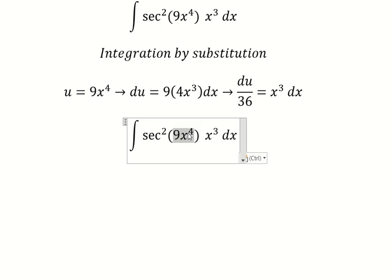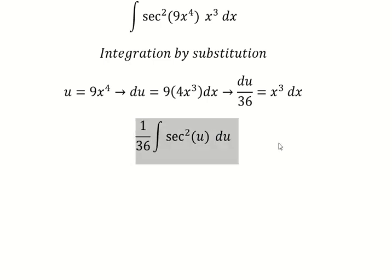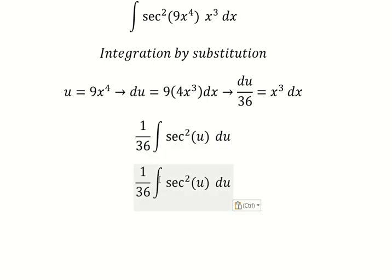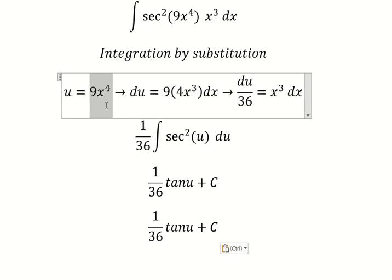We change this one for u, we change this one for x³ dx. And we have the final answer in terms of u, which is 1 over 36 tan u plus C.